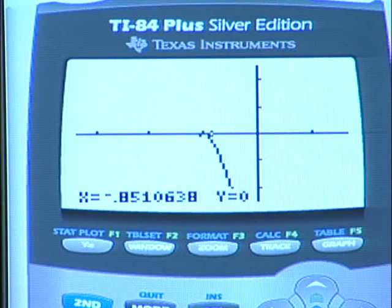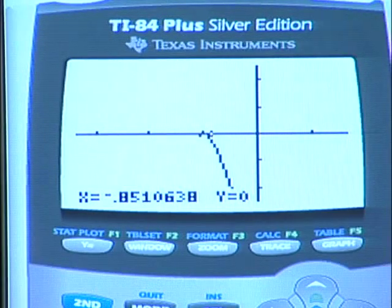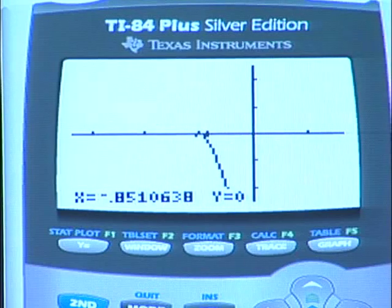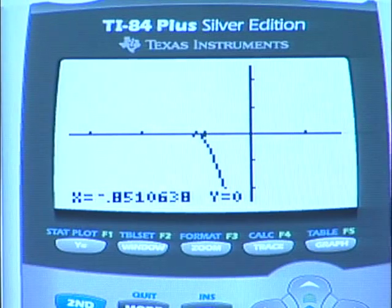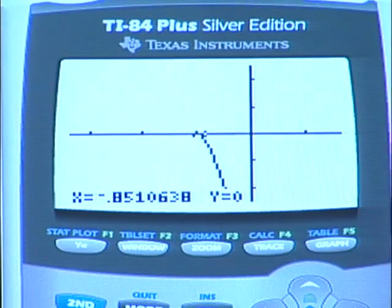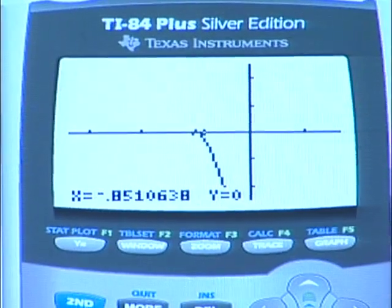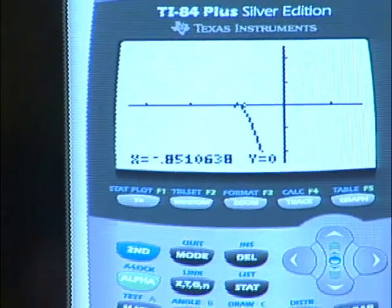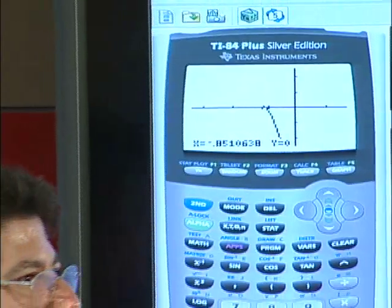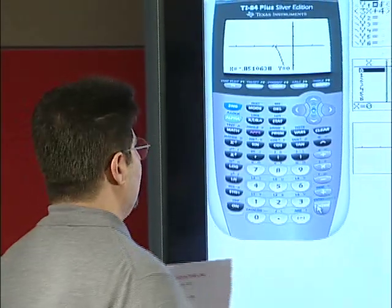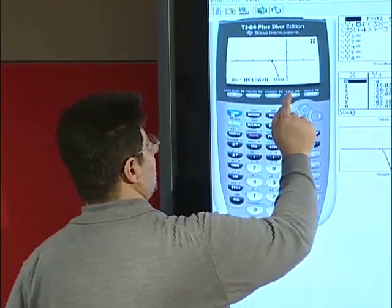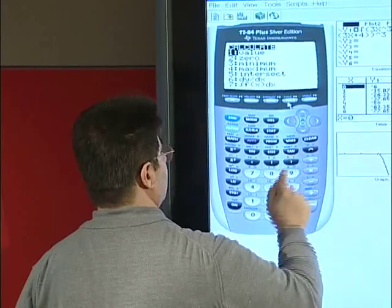And we will try to find the x-intercept of the resulting function. We will calculate the x-intercept by the facility provided in TI-83 and TI-84, the calculate 0. Second, calculate 0.